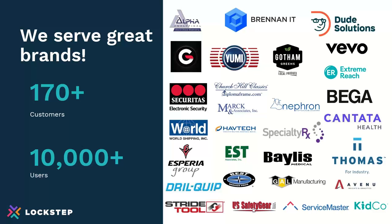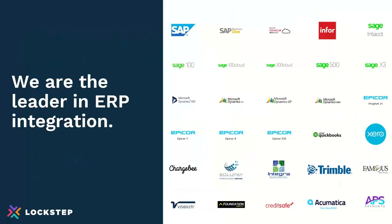We serve some great brands. Over 170 companies today are using the solution. We've got more than 10,000 users of the application and the customer self-service portal. We've got you covered — we're the leaders in integration. These are just some of the systems that we have direct integration to, and we're adding more all the time. The Sage ecosystem and Acumatica are key areas, but you can see the others that are included here as well.